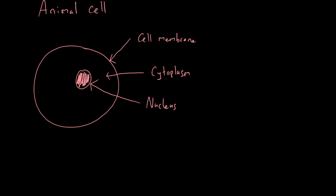The nucleus controls the activities of the cell. The way it does that is by containing the DNA - the really important molecule which gives you all your characteristics and controls what's going to be happening in your cell. Another structure you'll see in cells is the mitochondrion - collectively called mitochondria - and that's where aerobic respiration takes place.